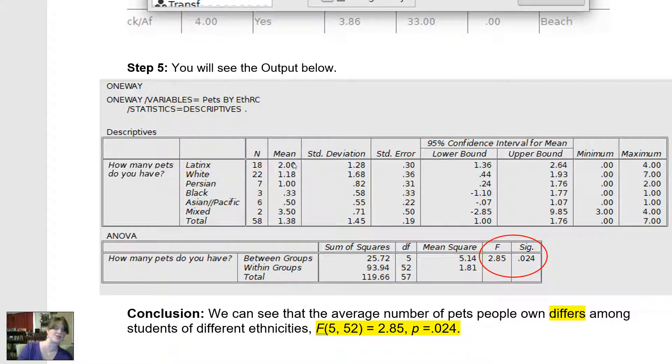Here I have the average number of pets for Latin students or Latinx students is 2. The average number of pets for white students is 1.18. The average number all the way down here to the average number for Asian or Pacific Islander students was 0.5.